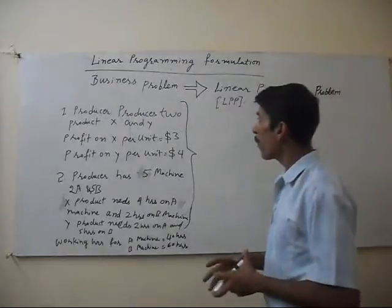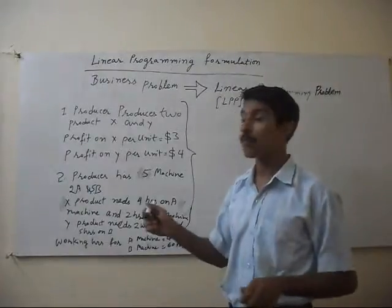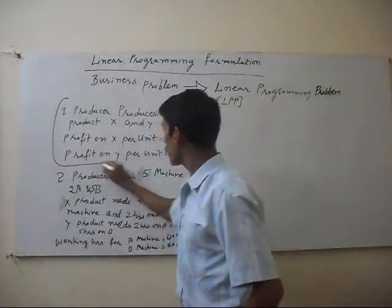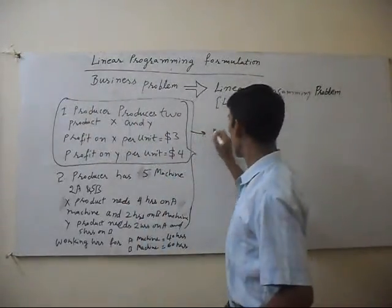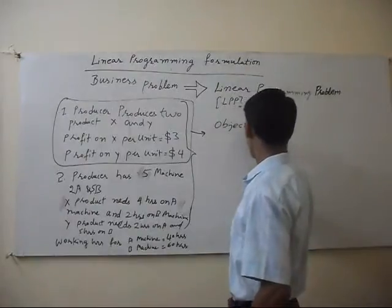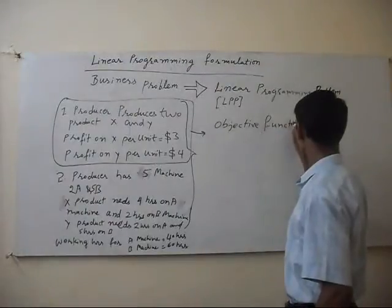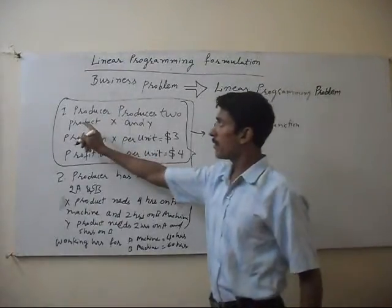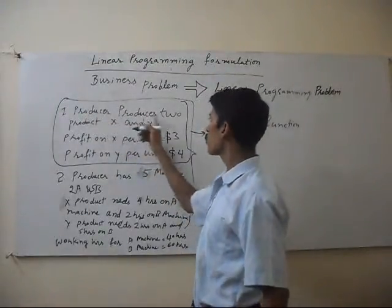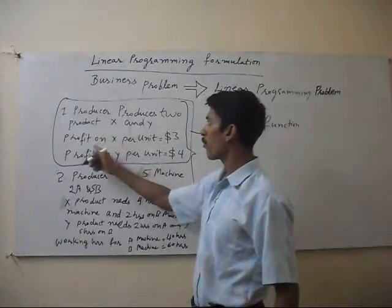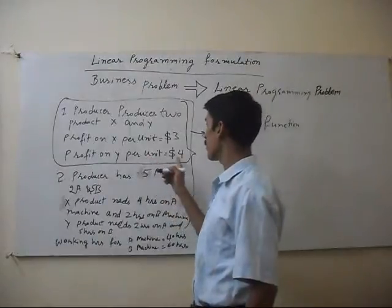So we have to convert it. First of all, we have to identify our objective function. From the problem, we are finding our objective function. The producer produces two products, X and Y. Profit on X is $3 and profit on Y is $4.